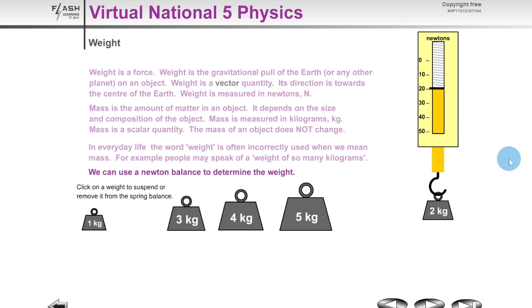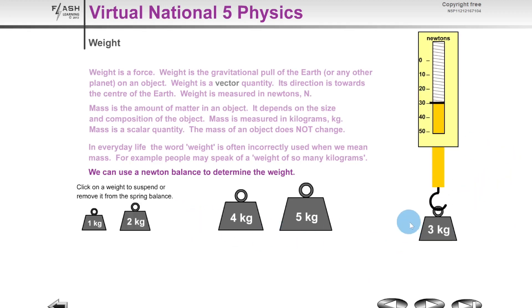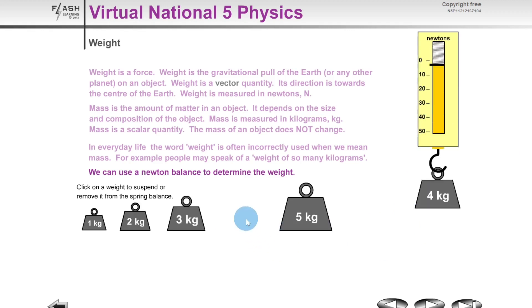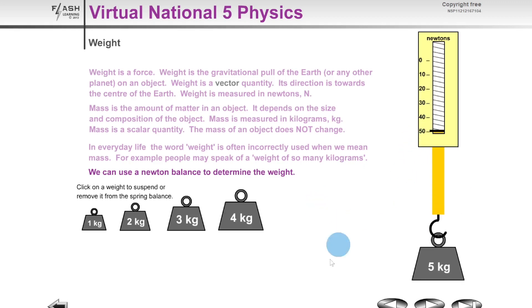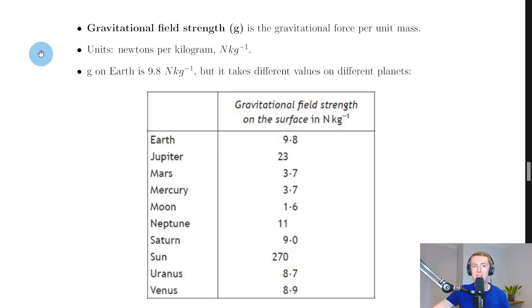Replacing the one kilogram mass with a two kilogram mass gives just under 20 Newtons. Similarly, three kilograms gives just under 30 Newtons, four kilograms just under 40 Newtons, and five kilograms just under 50 Newtons. So one kilogram of mass roughly corresponds to about 10 Newtons of weight, linked through gravitational field strength, which on Earth is 9.8 N/kg.